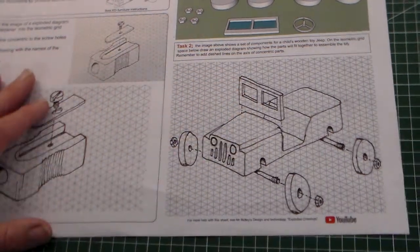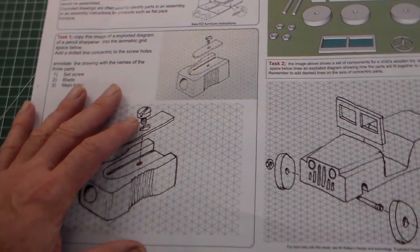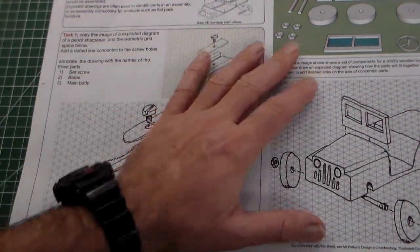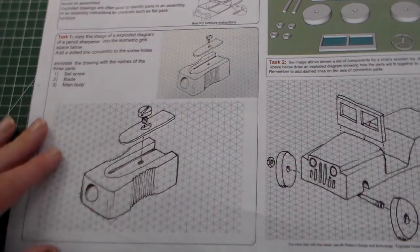There's the exploded diagram sheet, we've got task one pencil sharpener, task two is the jeep.